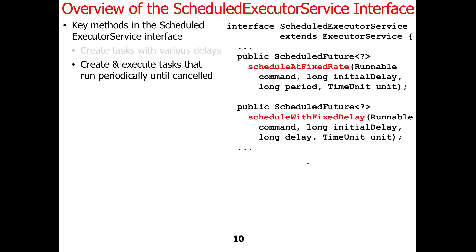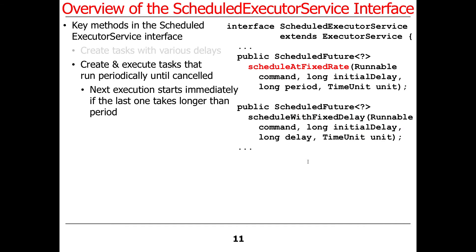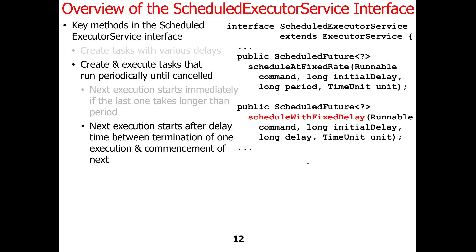There are also a couple of methods that can be used to schedule tasks to run periodically until you decide to explicitly cancel them. One method schedules things at a fixed rate — you provide an initial delay plus a period at which it will run, and it keeps doing that until canceled. If the execution time of the command takes longer than the period, then the next execution will start immediately, but you have to be careful not to mess up your delays.